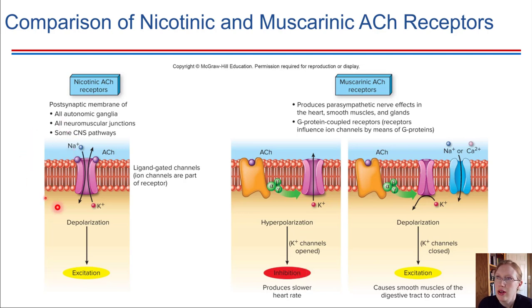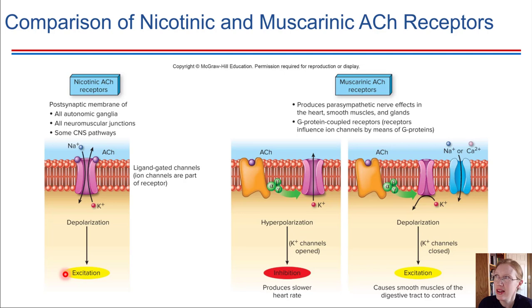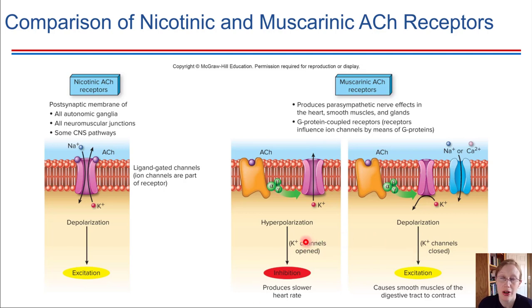So nicotinic receptors are predictable in the sense that they always lead to excitation. Muscarinic receptors are not quite as predictable, because they can do either — stimulate or inhibit — depending on the particular cell that we're dealing with.